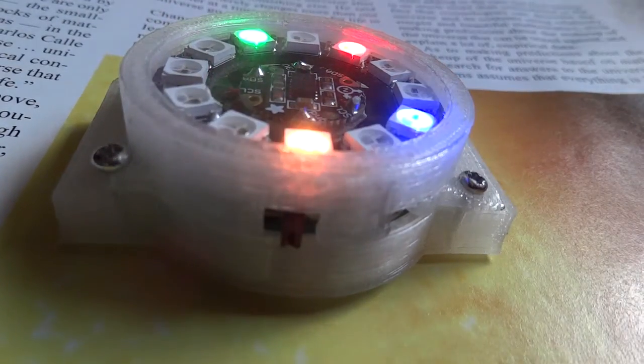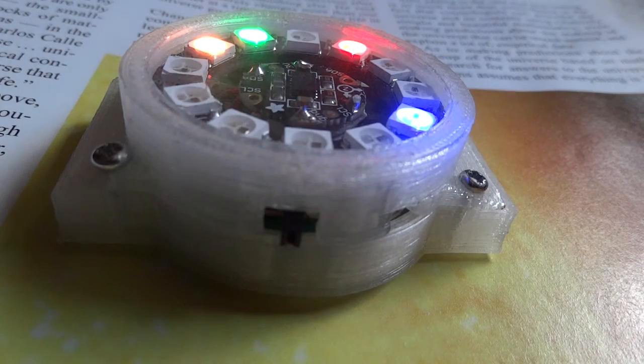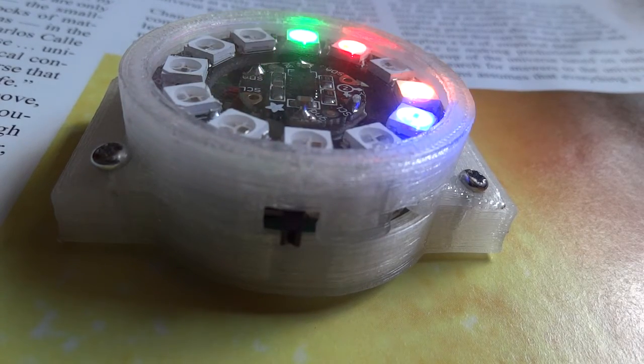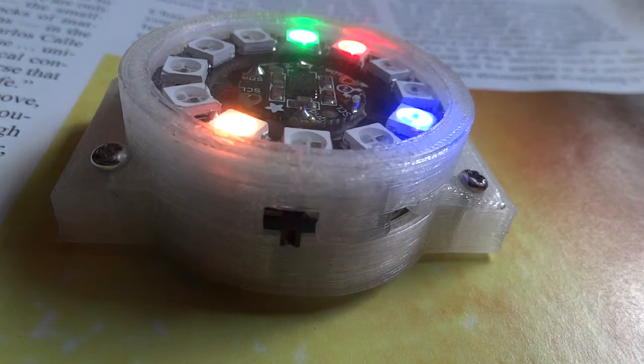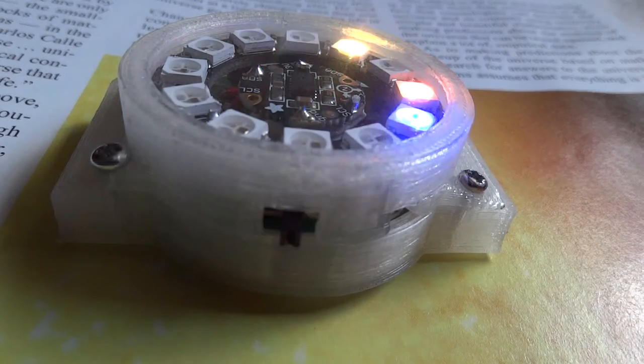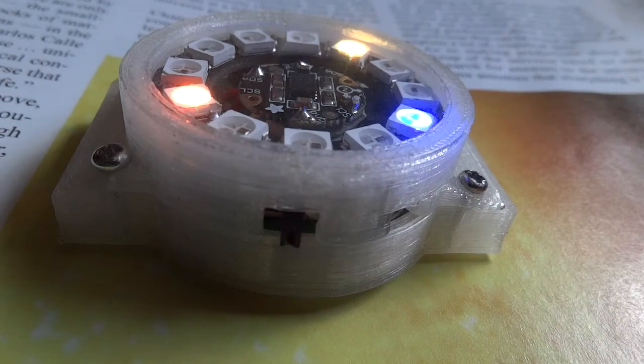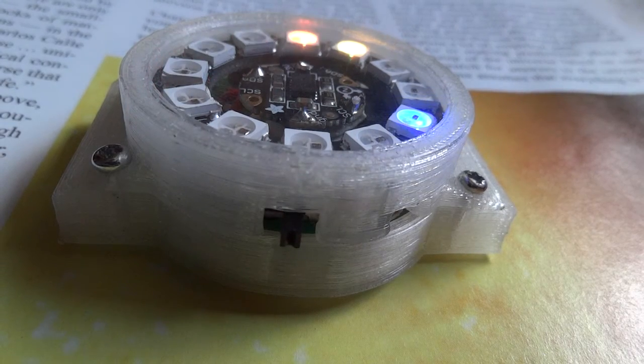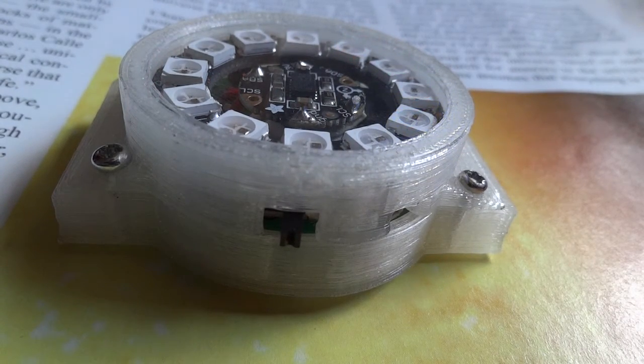One way is that whenever the watch is just sitting somewhere like this with no movement, after about 15 seconds, the lights will start to dim and eventually turn off, like so.